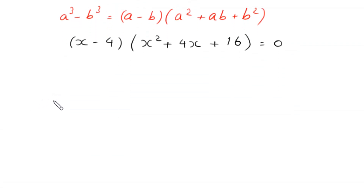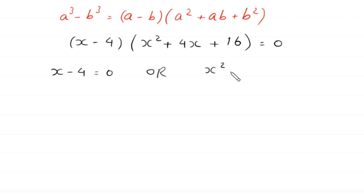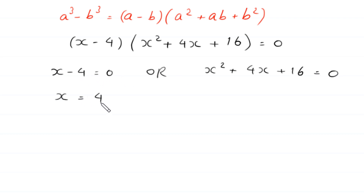From here, either the expression x minus 4 equals 0, or the expression x squared plus 4 times x plus 16 equals 0. From the first equation we get the value of x equals 4. This is the first solution of this equation.